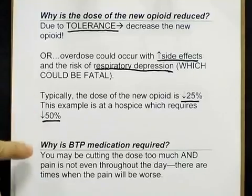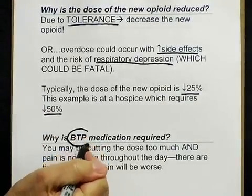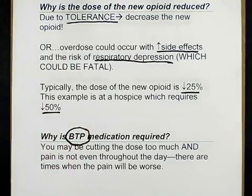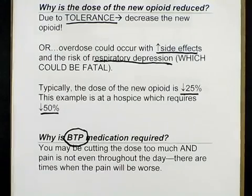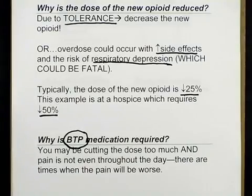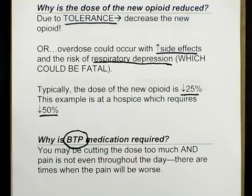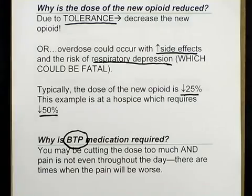When we transfer a patient to a new opioid, we've got to give the patient breakthrough pain medication, for two reasons. One is that we may have cut the dose too much and we don't want the patient to be in severe pain. The other reason is that pain is not even throughout the day — pain cycles. You'd expect the patient to need more pain medication at some times than at others, so we treat that acute breakthrough pain by giving breakthrough doses in addition to the new long-acting opioid.